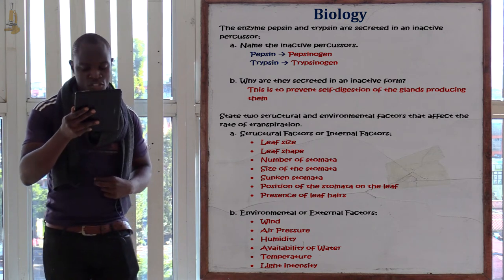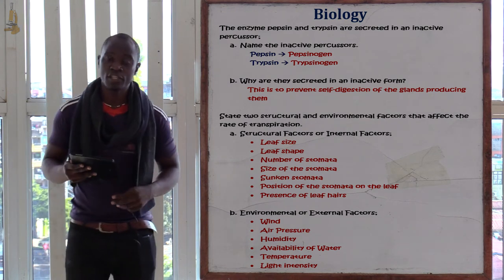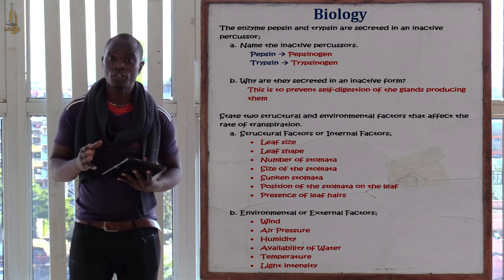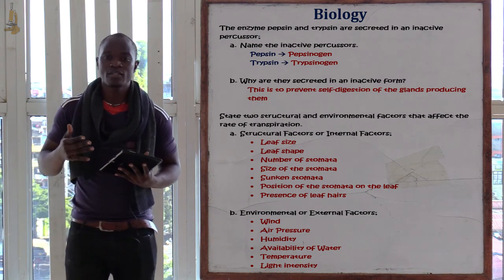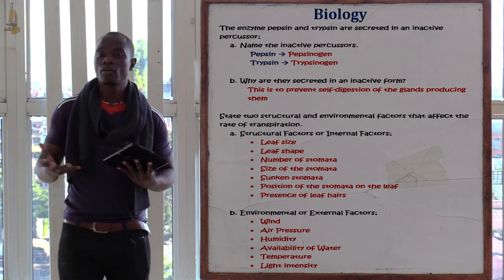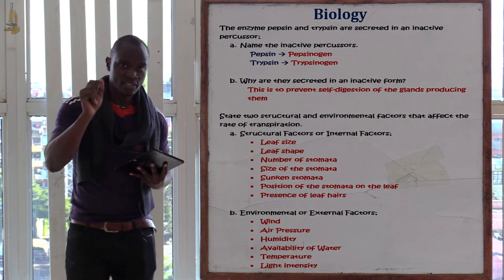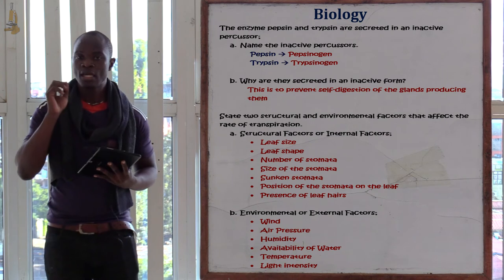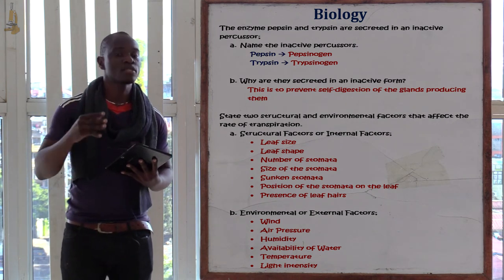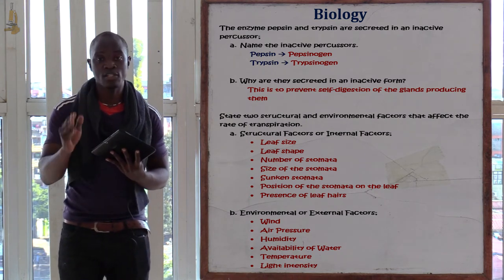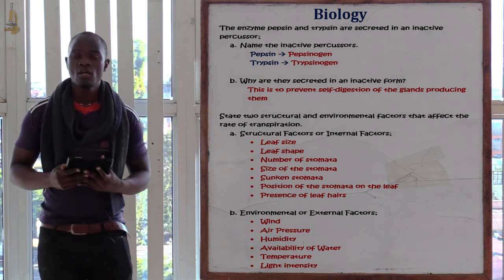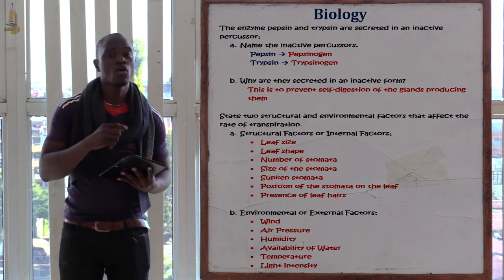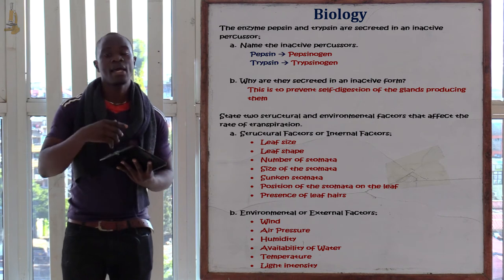Transpiration is the process whereby plants lose excess water to the surrounding — always say 'excess water,' not just 'water.' There are two main factors affecting transpiration: structural (internal) factors and environmental (external) factors.